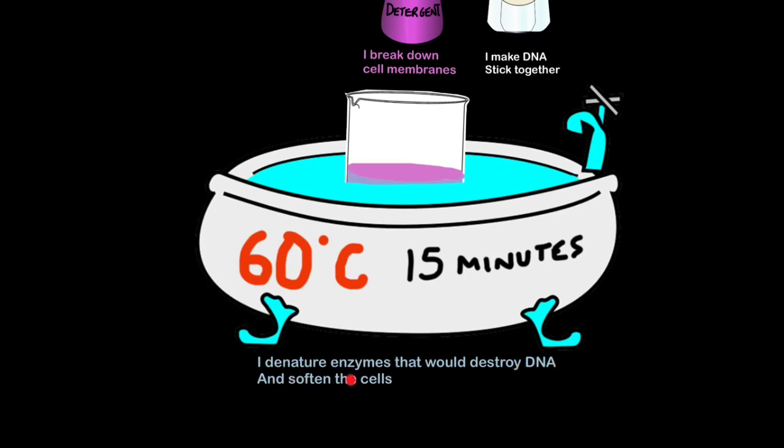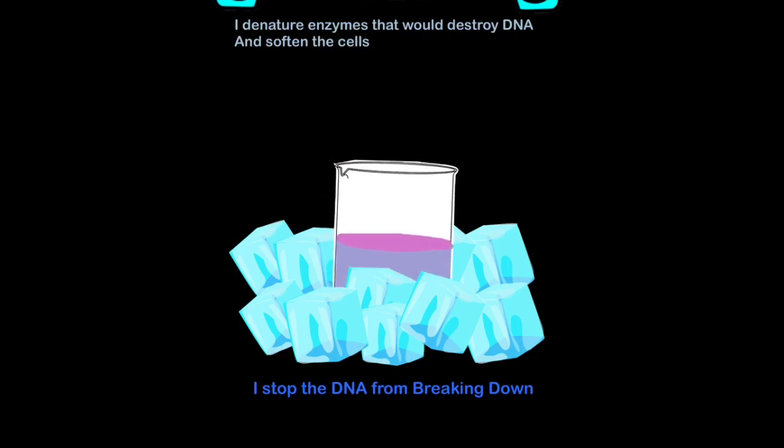Also, heat softens the cells, making it easier to break them down further. Next, we chill the beaker in some ice. Ice will also slow down the activity of enzymes, preventing DNA from breaking down.